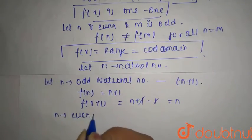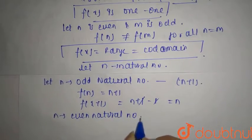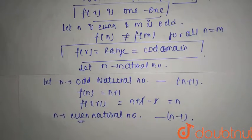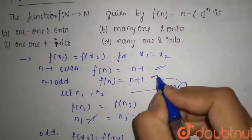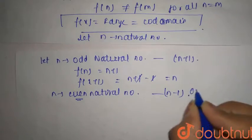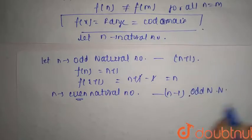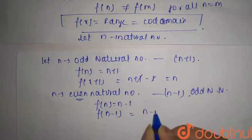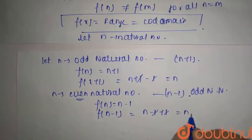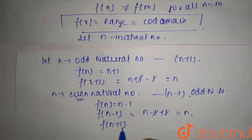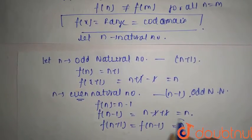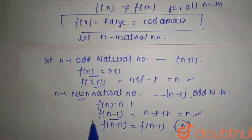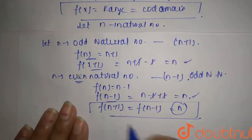For n as an even natural number, f(n) equals n minus 1, which gives an odd natural number. And f(n minus 1) equals (n minus 1) plus 1, which again equals n. So f(n plus 1) and f(n minus 1) both equal n. This confirms the function is onto.